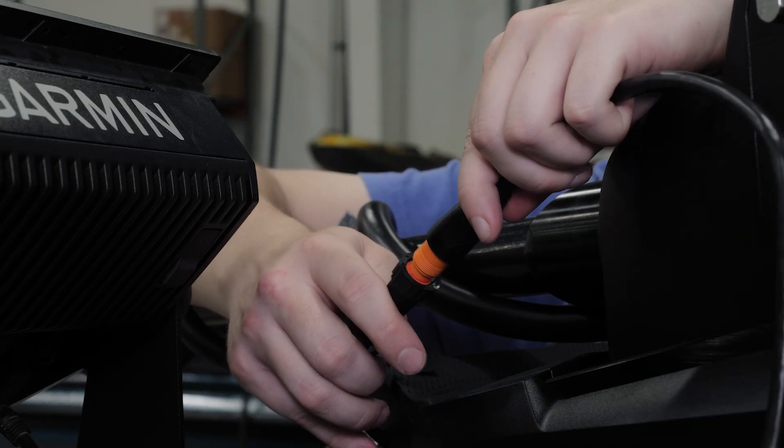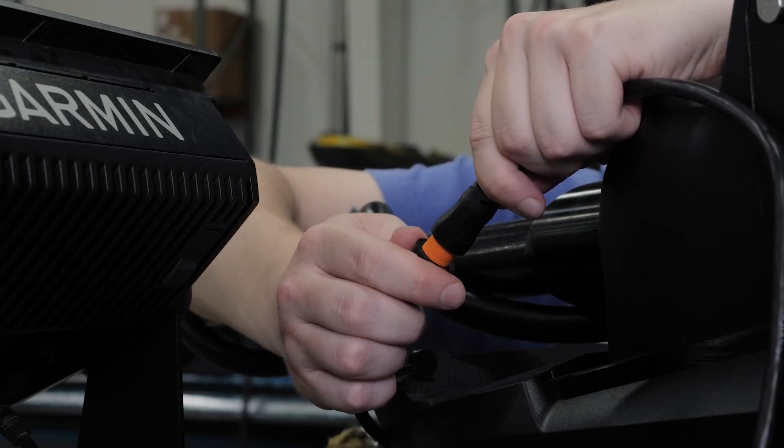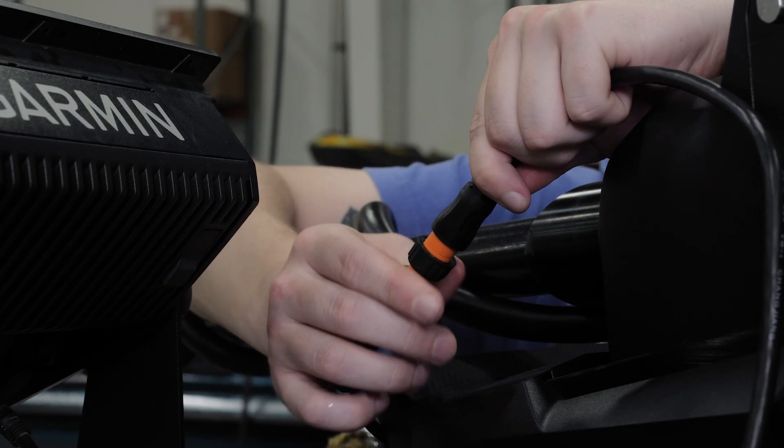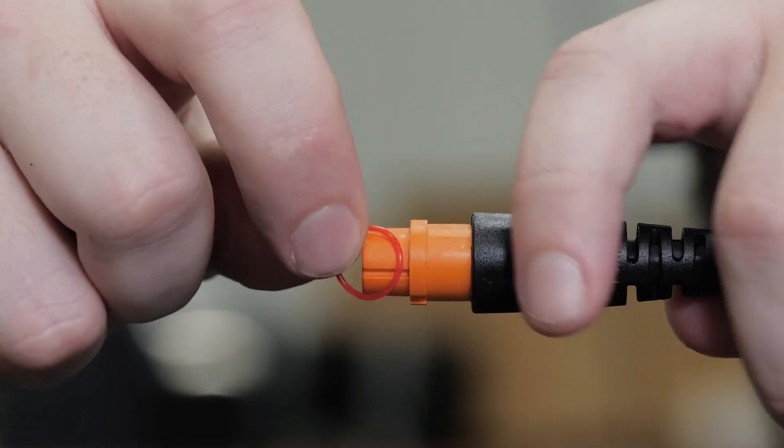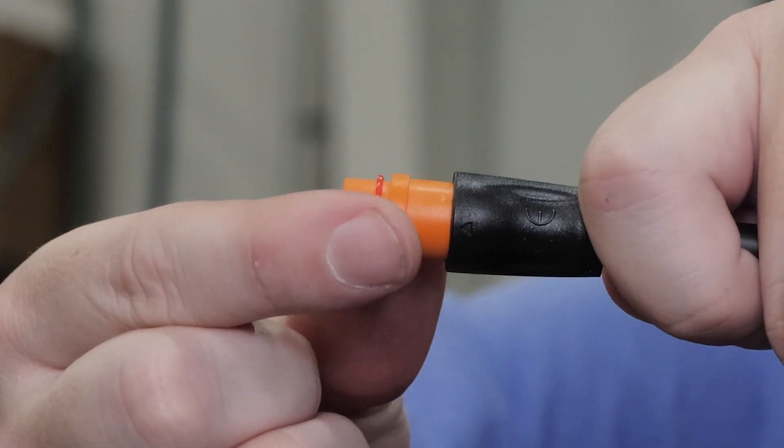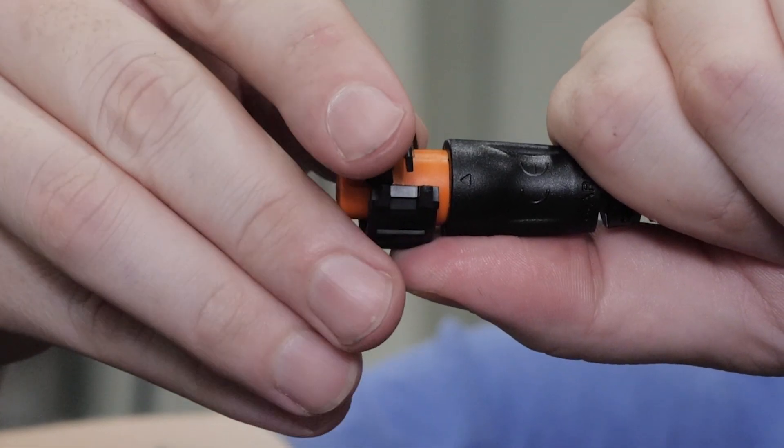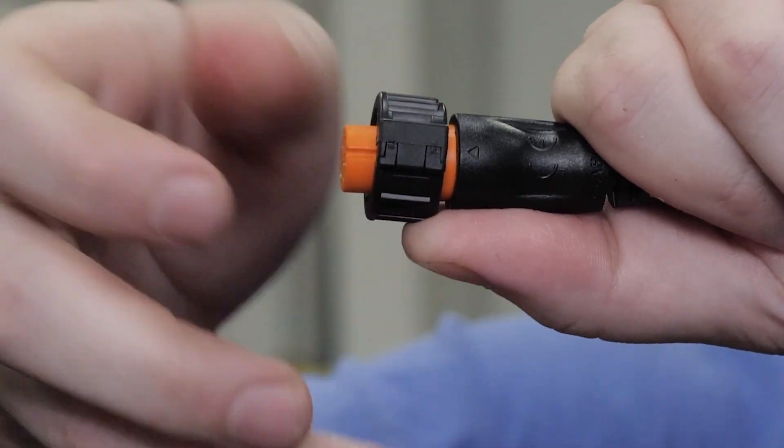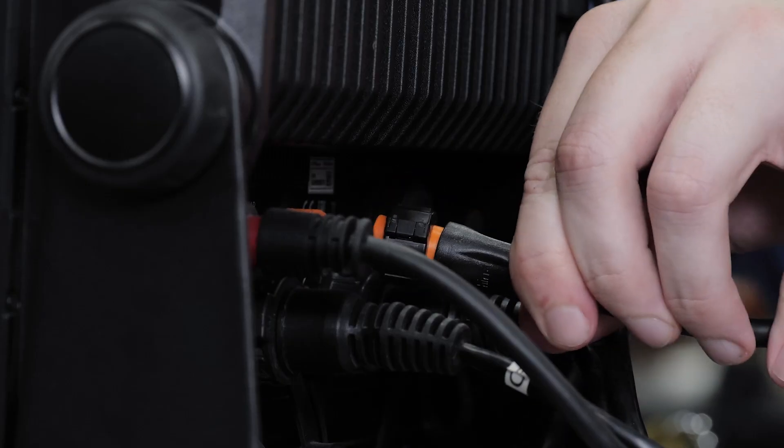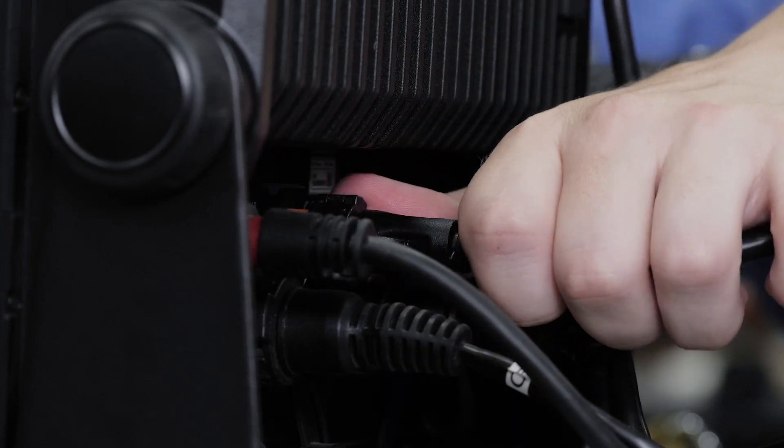Route the transducer cable to your compatible chart plotter. If needed, connect the included extension cable or a longer extension cable. Install the O-ring and the locking collar on the end of the transducer cable. Then connect the transducer cable to the transducer port on the back of the chart plotter, securing the locking collar on the 12 pin transducer port.